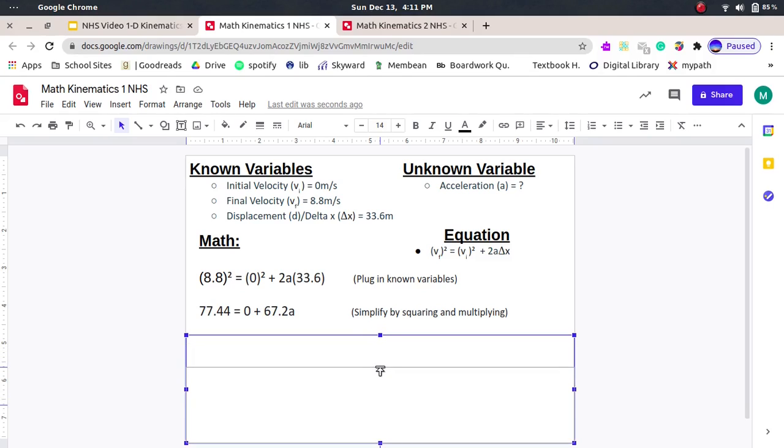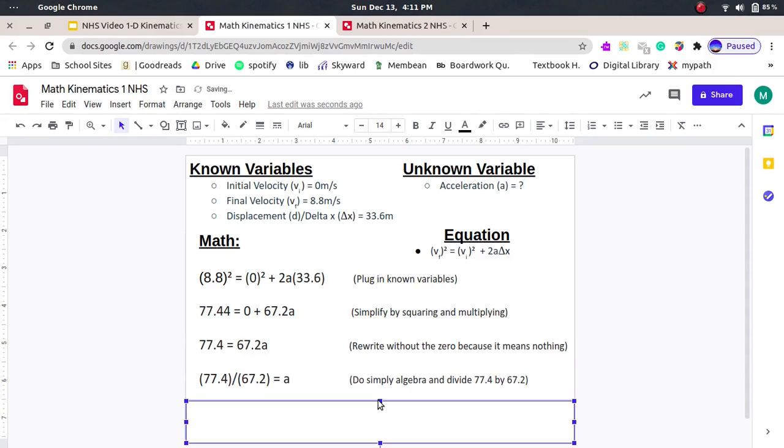The next step is just to rewrite without the zero because it means nothing. Our last step is to do 77.4 divided by 67.2. This is going to get us our answer A, and once you do that, you're going to figure out that it equals about 1.152 meters per second squared. Remember those units.